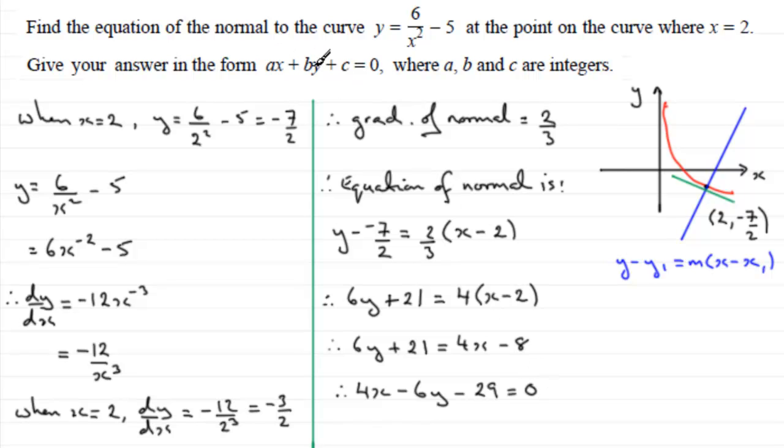And there's my form. Okay, I'm in the right form. Ax plus by plus c equals 0. If I was asked what a, b and c were, a would be 4, b would be minus 6, and c would be minus 29. Okay, so hope you got that, and there we go.